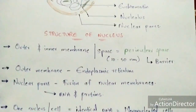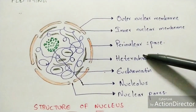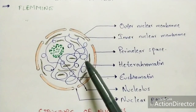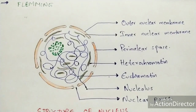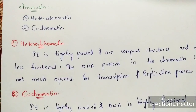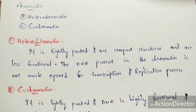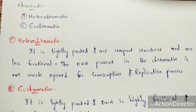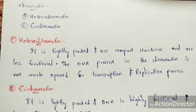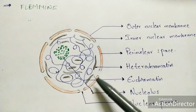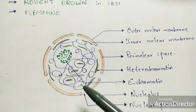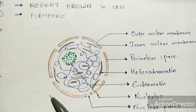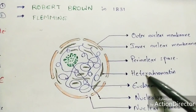Chromatin is of two types: heterochromatin and euchromatin. Heterochromatin is the dark, tightly packed, compact structure drawn in black in the diagram — it is less functional. The DNA present in heterochromatin is not much open and does not undergo transcription or replication processes. It is essentially non-functional.